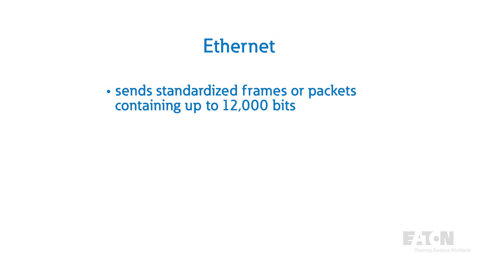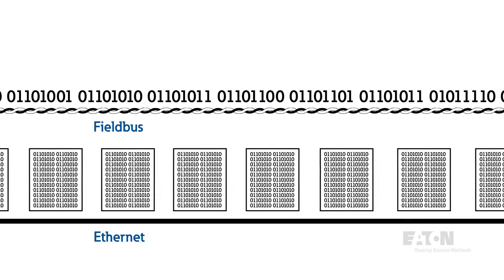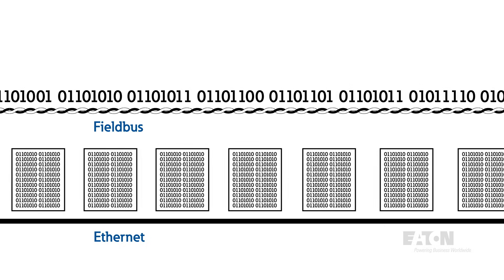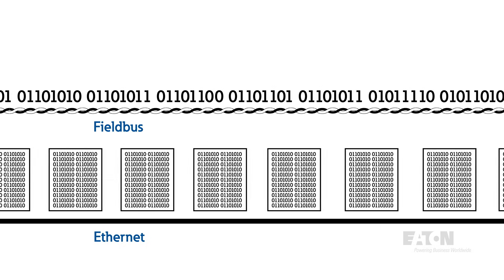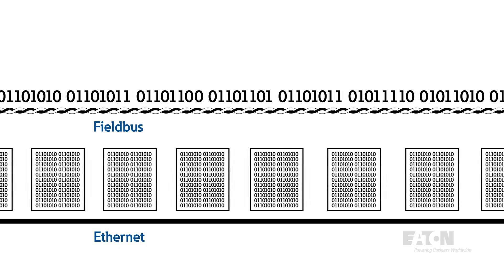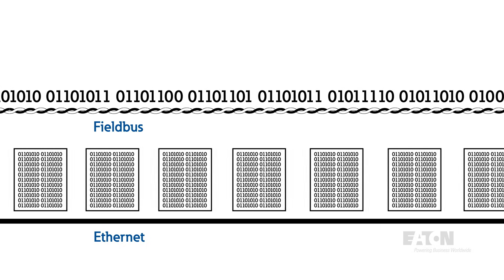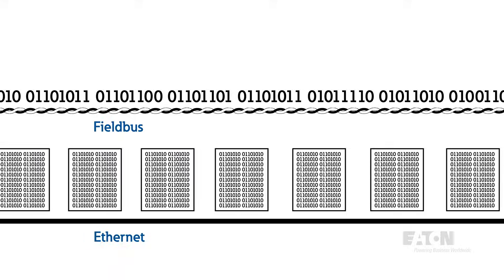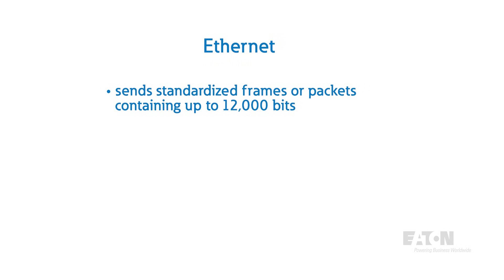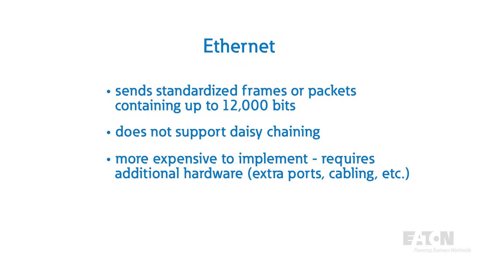The major difference between Ethernet and Fieldbus is how data is sent. Rather than transmitting information bits one by one, Ethernet sends standardized frames, or packets, that can each contain up to 12,000 bits. This sort of information density is suitable for creating networks on which many devices can all communicate with each other, either on a local area network or a wide area network. The disadvantage is that Ethernet can't be daisy-chained and requires extra ports to interface, and the extra cabling and support hardware, like network switches, make it much more expensive to implement.